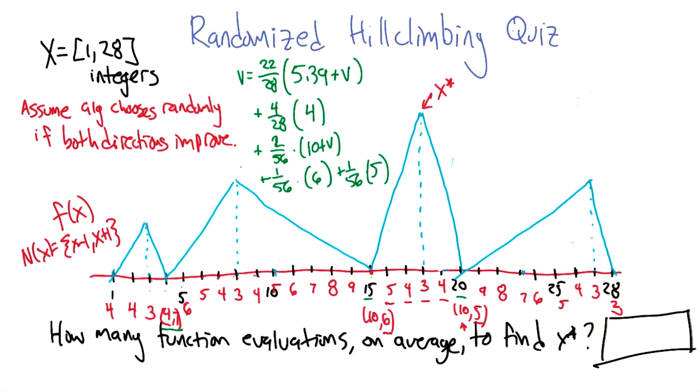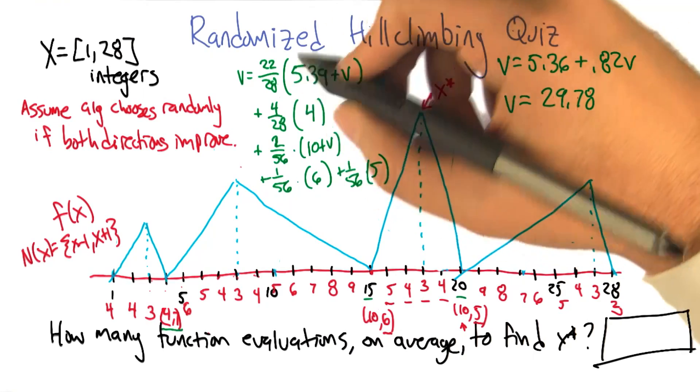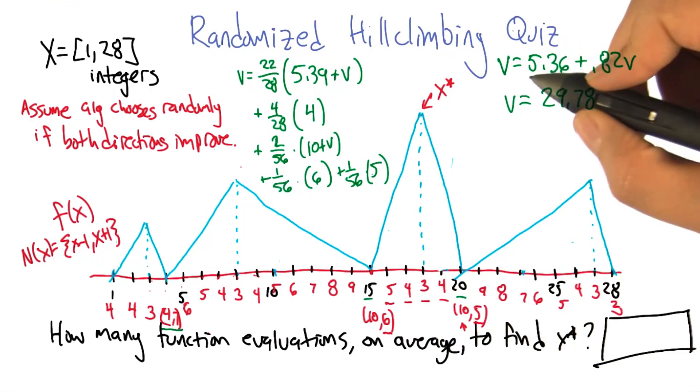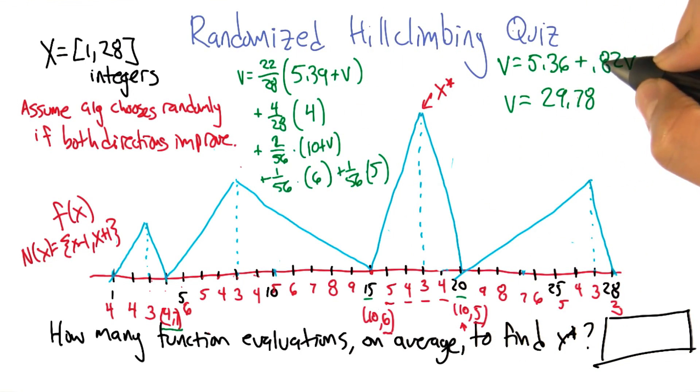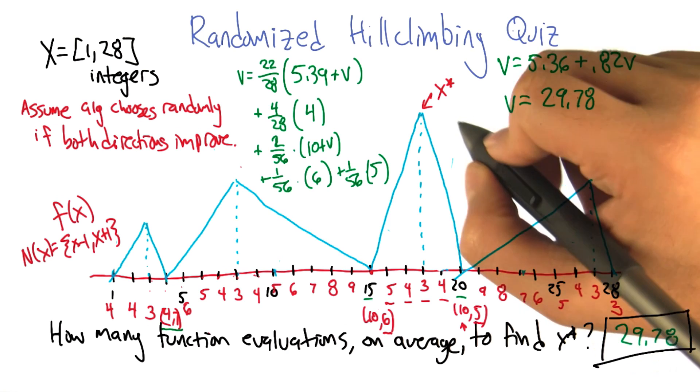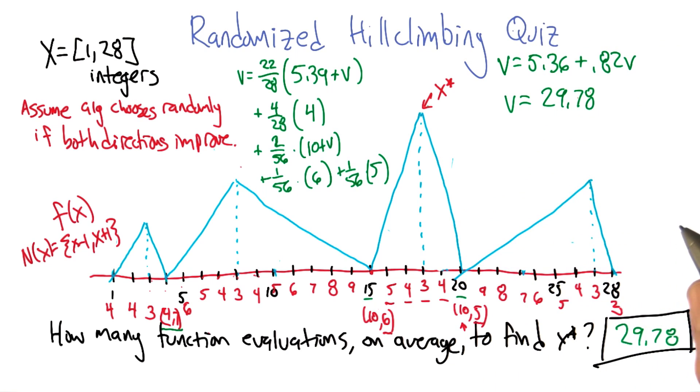So this all makes sense. And obviously if you just add those all up, you can solve for V and the answer is exactly. So just algebraically simplifying this equation gives us V equals 5.36 plus 0.82V. Solving for V gets us 29.78. So it only takes 29.78 function evaluations before we first hit the maximum.